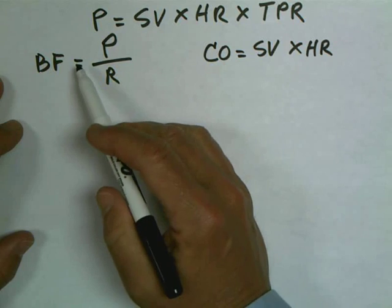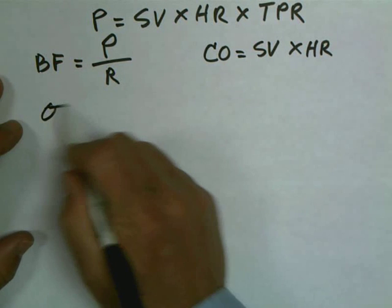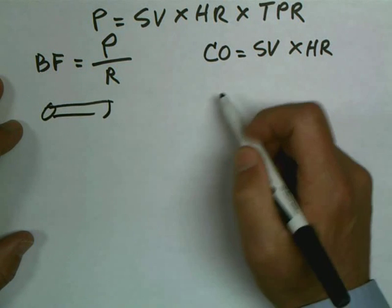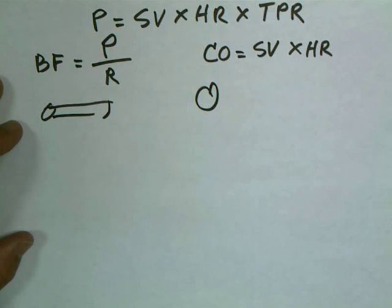Over here we have blood flow through a blood vessel, and over here we have blood flow through the heart. We also know that these things have to be equal to each other, otherwise blood is going to back up someplace.